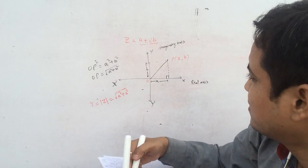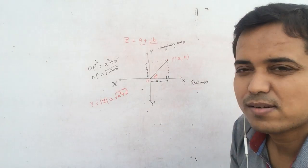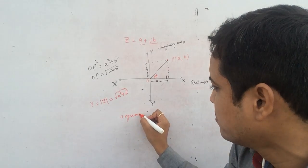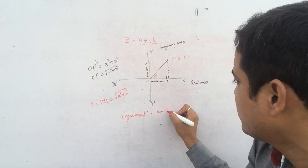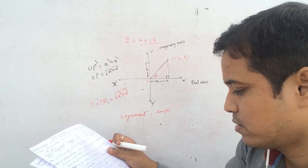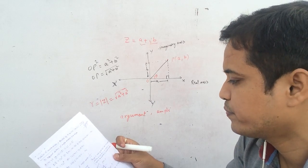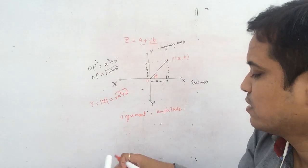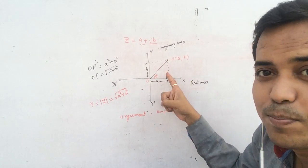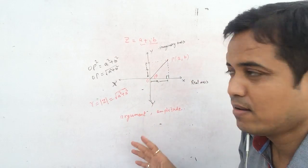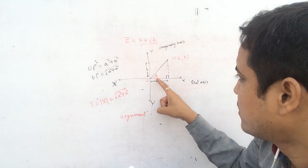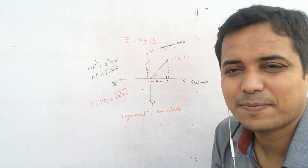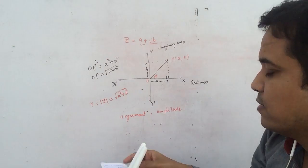Now what we have to find is the angle — we call it the argument, or amplitude. So we call it theta. Theta is the angle formed by line OP with the positive direction of the x-axis. So theta is the argument. Do you want to find the value of theta?